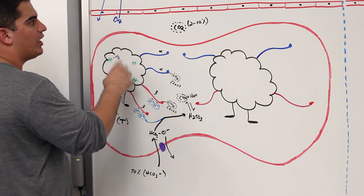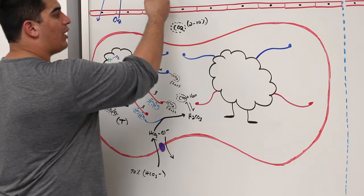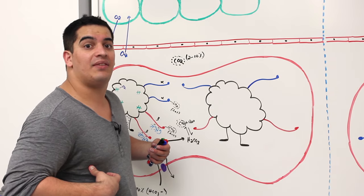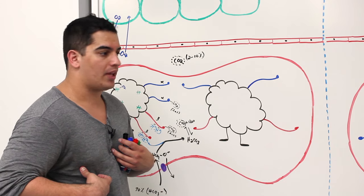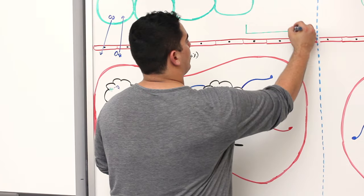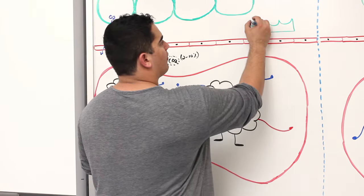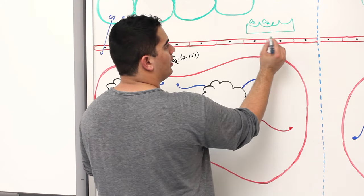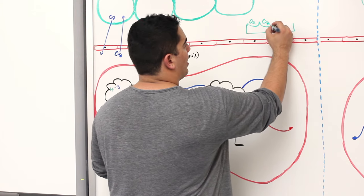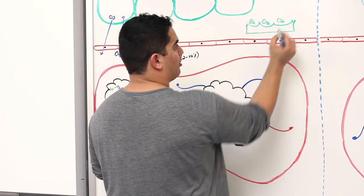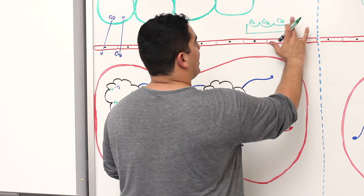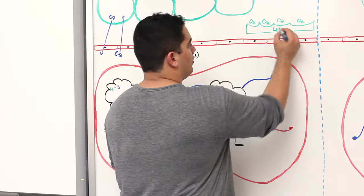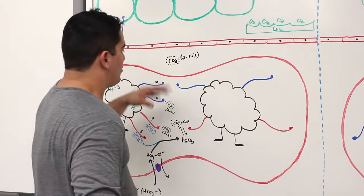In the deoxy form, positive cooperativity means that when oxygen moves from the alveoli into the blood to bind onto hemoglobin, the first one has a hard time binding, but it opens the pocket for the second one, making it easier. The second one makes the third pocket even bigger, and the third makes the fourth even bigger. This is positive cooperativity — the hemoglobin molecule acting like a crown.